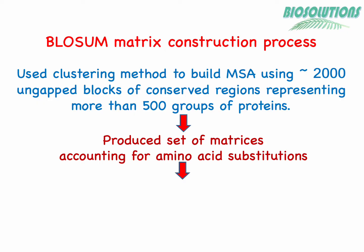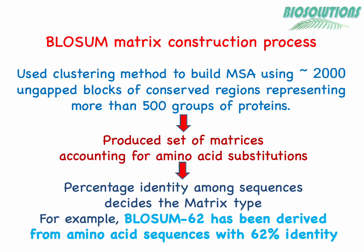The probabilities of a certain amino acid changing into another amino acid were calculated. One amino acid can change into another due to insertion and deletion mutations in DNA sequences during evolution. These changes are termed substitutions, and BLOSUM therefore is a substitution matrix. Next, log odds ratio calculations were performed, resulting in values which make up the BLOSUM matrix.